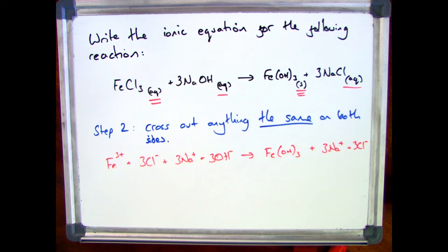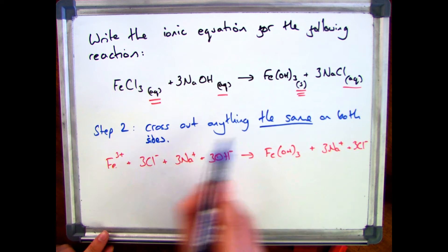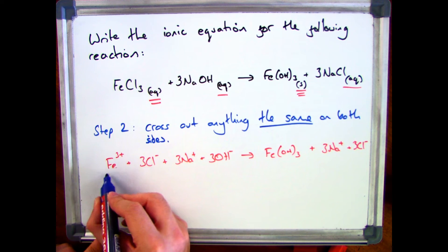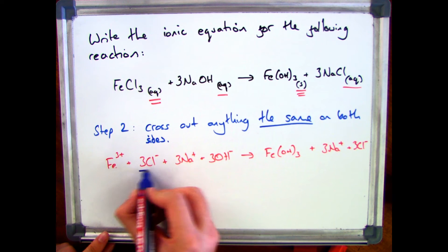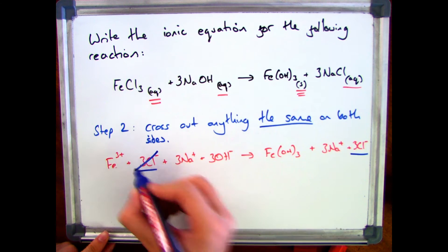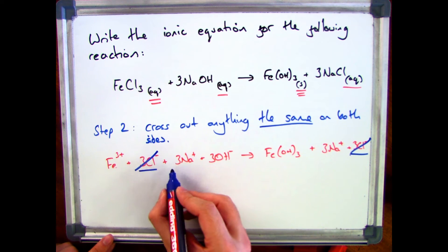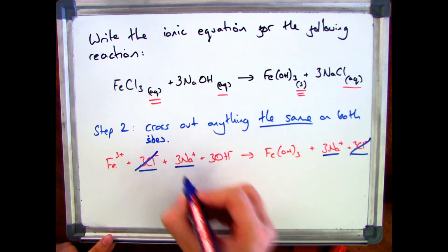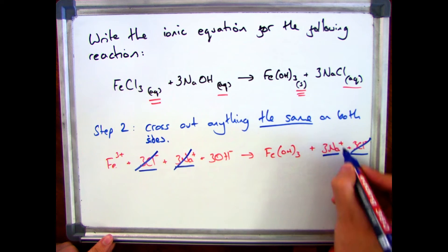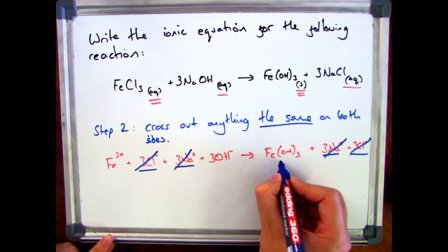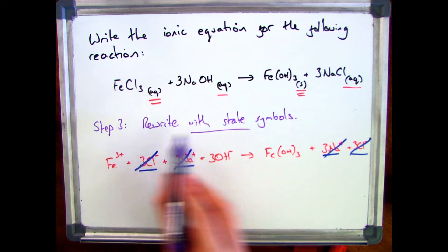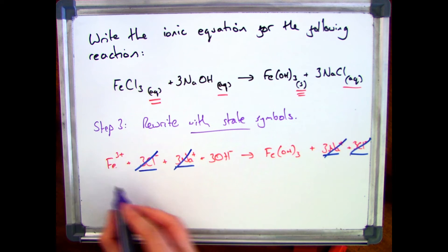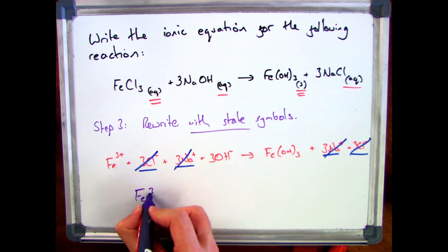Once you've separated out the ions, the next thing you need to do is cross out anything that's the same on both sides. In this case, chlorine appears on both sides so I put a line through both of those. I can do the same with sodium, because I've got 3 Na⁺ on both sides. But I can't cross out OH⁻ because it isn't on both sides.